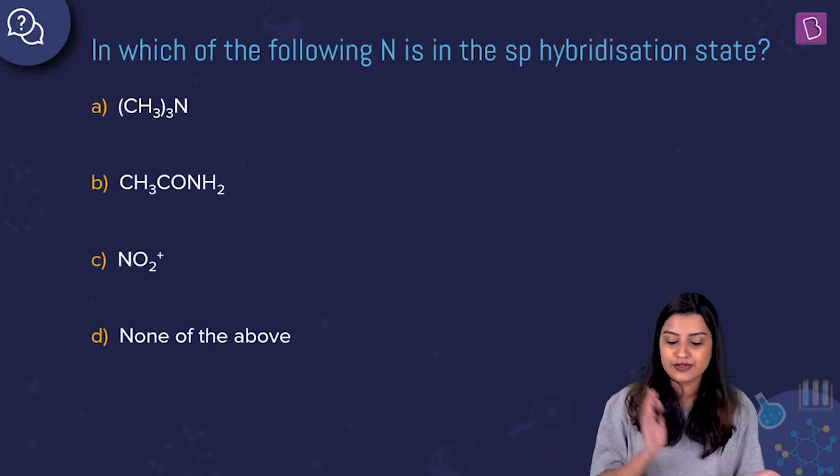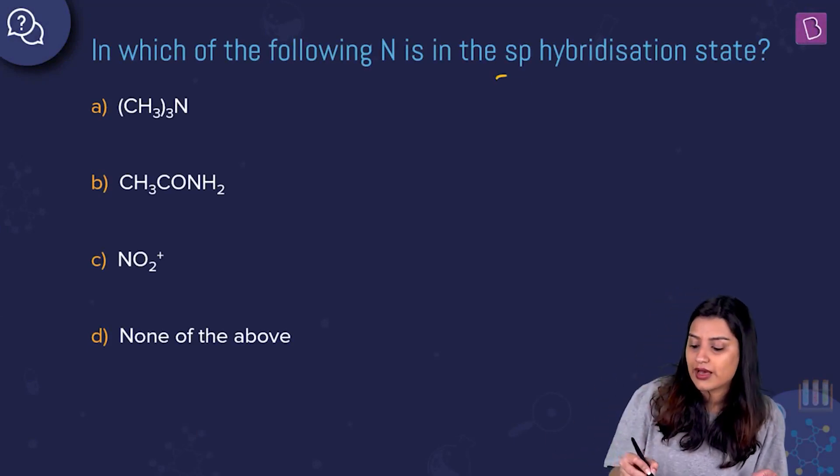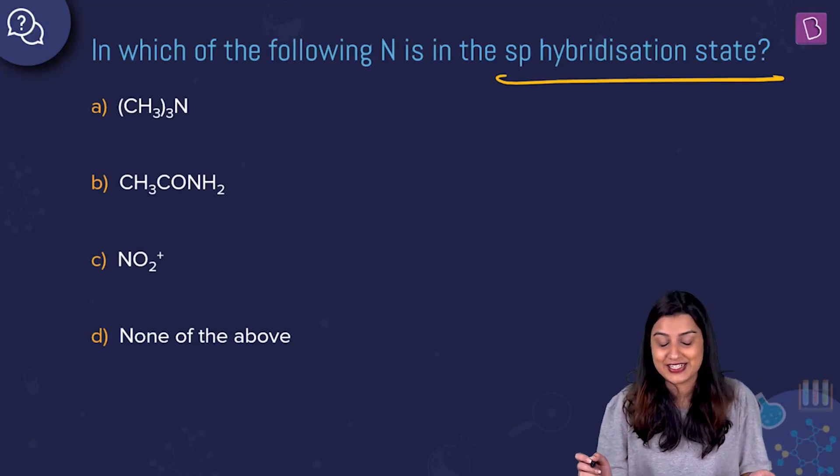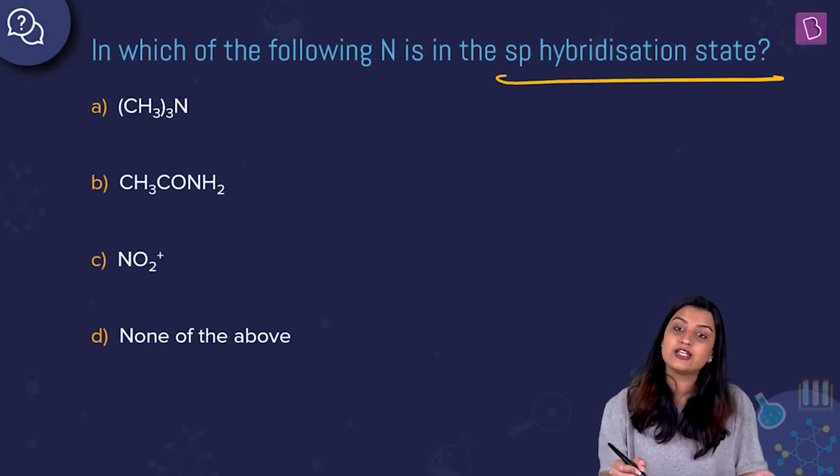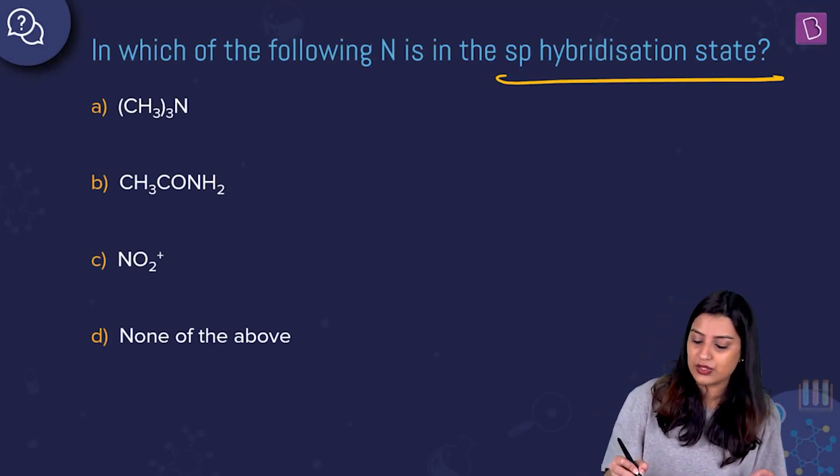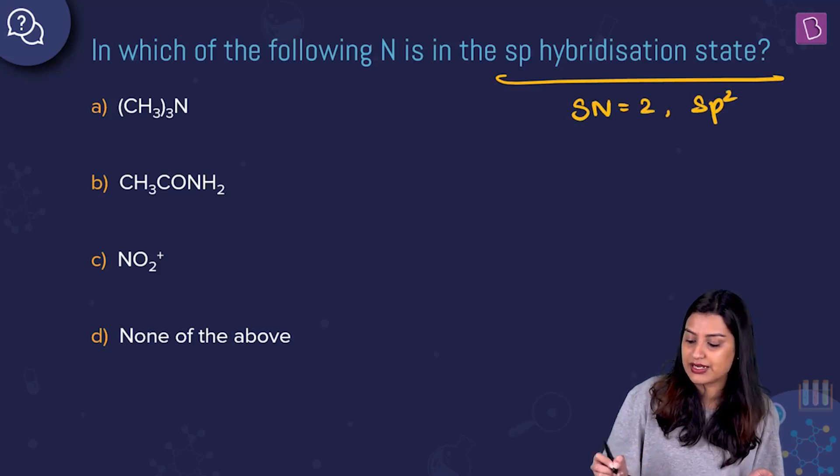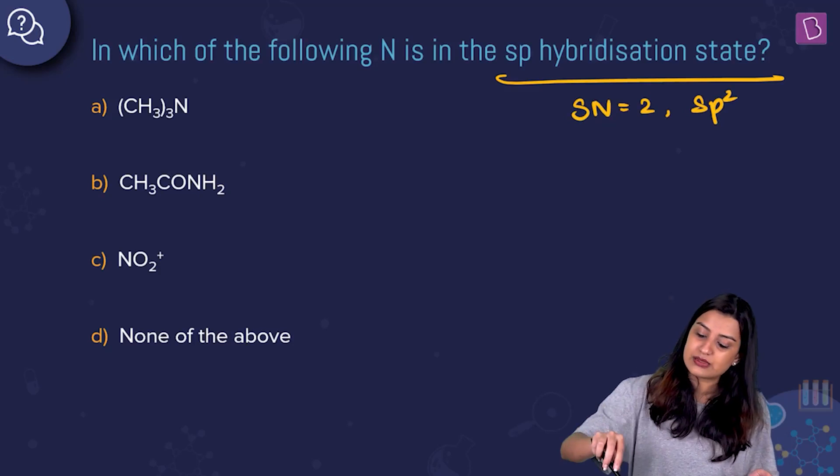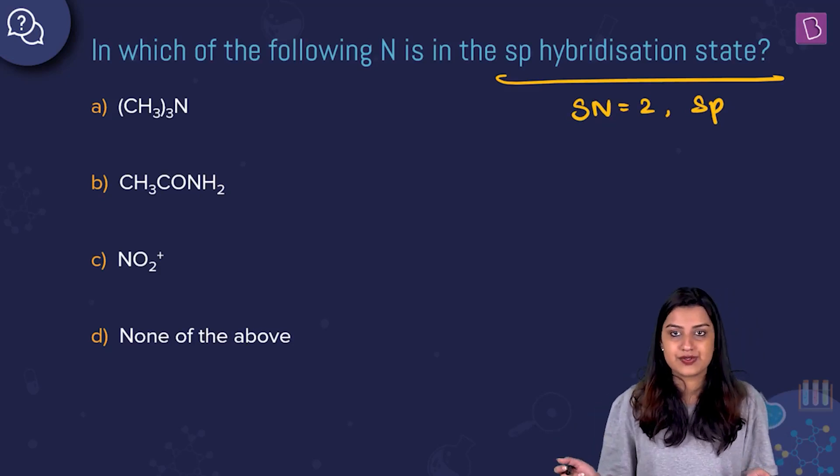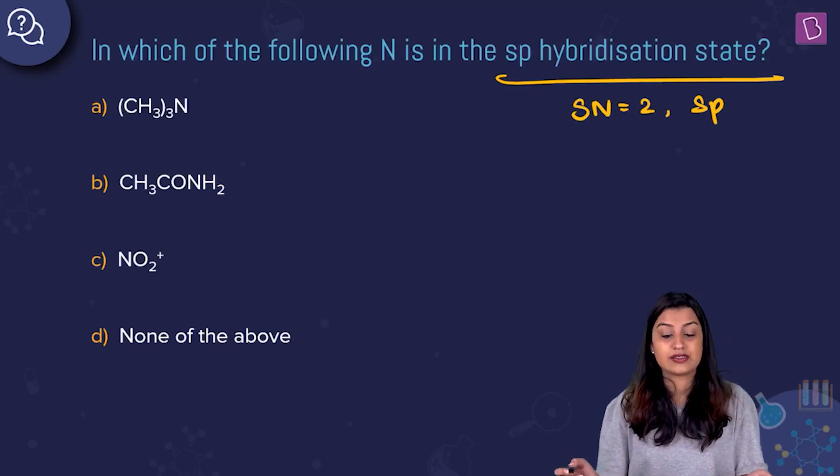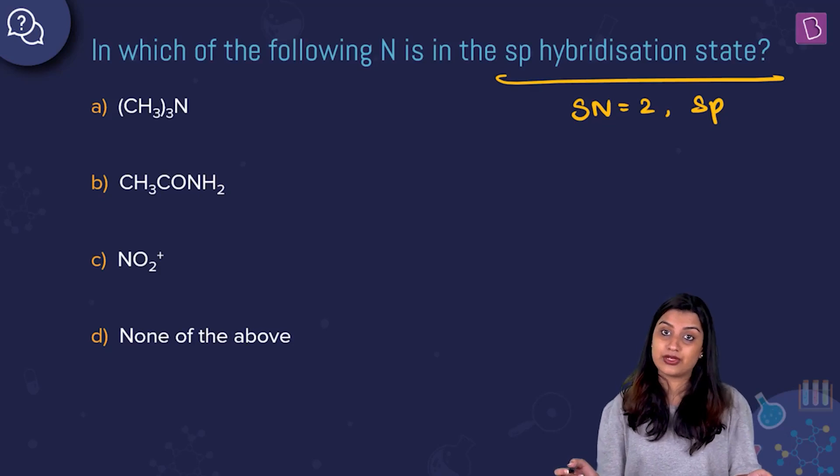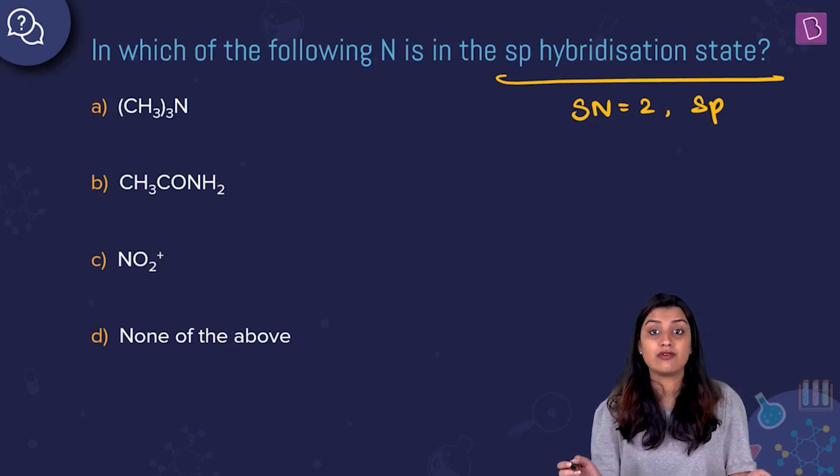In which of the following is nitrogen in the sp hybridization state? What do we know about sp hybridization? If the steric number is equal to 2, then the central atom is sp hybridized. Let's see where we can find the steric number equal to 2. In all the cases we will take nitrogen as a central atom and then see what is the steric number.